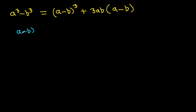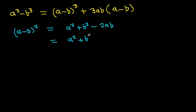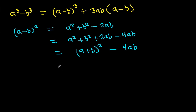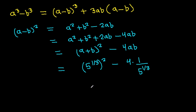Now, (a minus b)² equals a² plus b² minus 2ab, which equals (a plus b)² minus 4ab. Substituting, (a plus b) is 5^(1/3), so (a minus b)² equals (5^(1/3))² minus 4 over 5^(1/3), which is 5^(2/3) minus 4 over 5^(1/3).